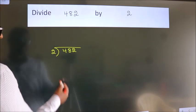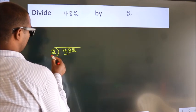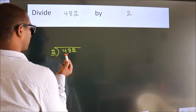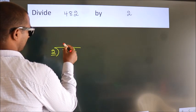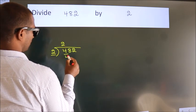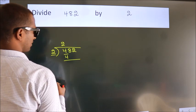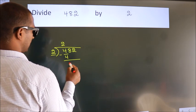Next. Here we have 4, here 2. When do we get 4? In 2 table. 2 2's, 4. Now, we should subtract. We get 0.